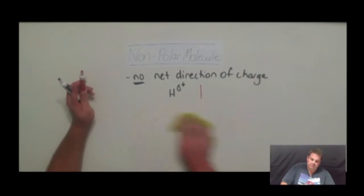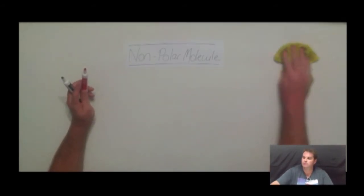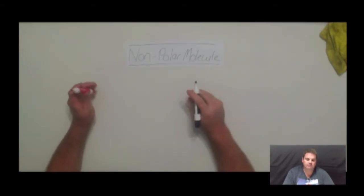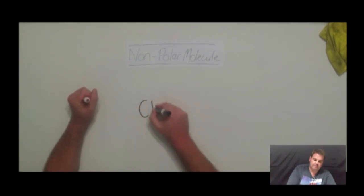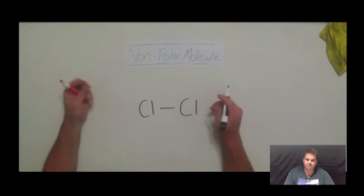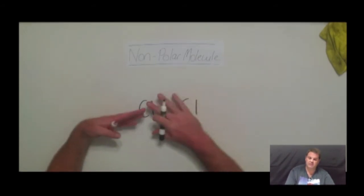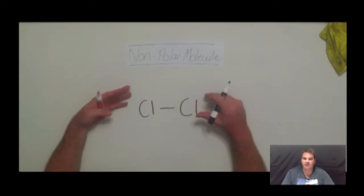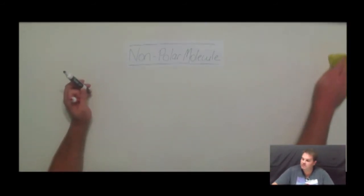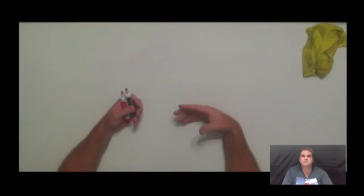You can also have very simple non-polar molecules — what we call diatomic molecules. Going back to the chlorine-to-chlorine bond: in a chlorine molecule, there is pretty much equal sharing of electrons with no charges and no net direction of charge overall — so it's also a non-polar molecule. Keep these in mind for when we start talking about the three different types of secondary bonds.